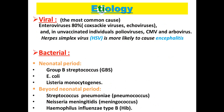Regarding etiology, viruses are the most common cause of meningitis, with about 80% being enteroviruses such as Coxsackie viruses and echoviruses. Other viruses include polioviruses, CMV, and arboviruses. Herpes simplex virus is more likely to cause encephalitis rather than meningitis.